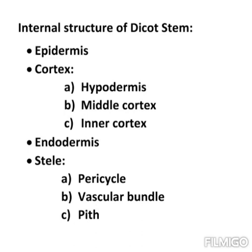Vascular bundles are conjoint, collateral, endarch, and open — remember the short form C-C-E-O. Conjoint means xylem and phloem lie on the same radius. Collateral means xylem lies towards the center and phloem towards the periphery. Endarch means protoxylem lies towards the center and metaxylem towards the periphery. Open means cambium is present between xylem and phloem. The vascular bundles are arranged in a ring around the pith.